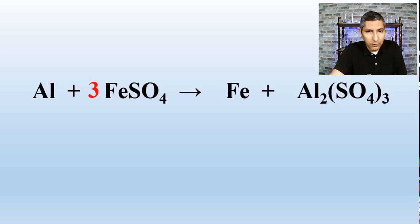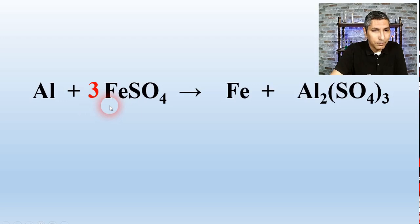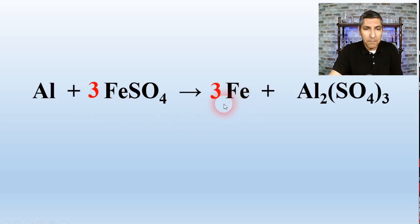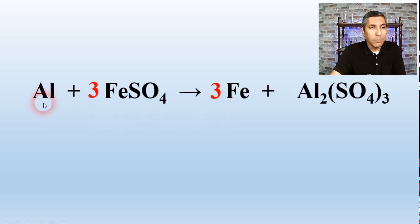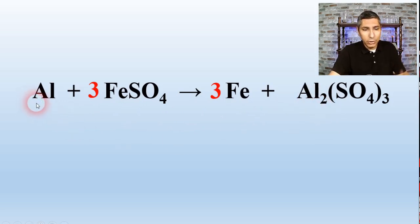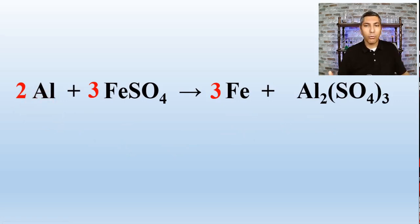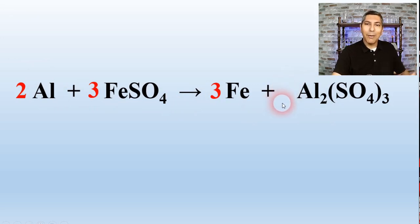Now let's look at the iron atoms. We have three iron atoms on the left side and only one on the right side, so I multiply the Fe on the right by 3. Lastly, let's look at the aluminum atoms: one aluminum on the left and two on the right, so I multiply the aluminum on the left by 2. Putting a 2 there balances the equation completely. My coefficients are 2, 3, 3 — and of course there's an understood 1 in front of the last substance, even though we don't write it.